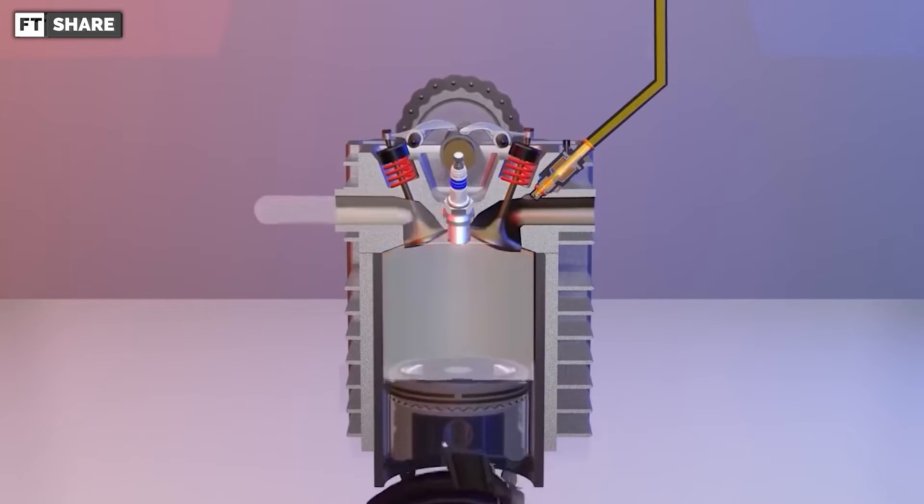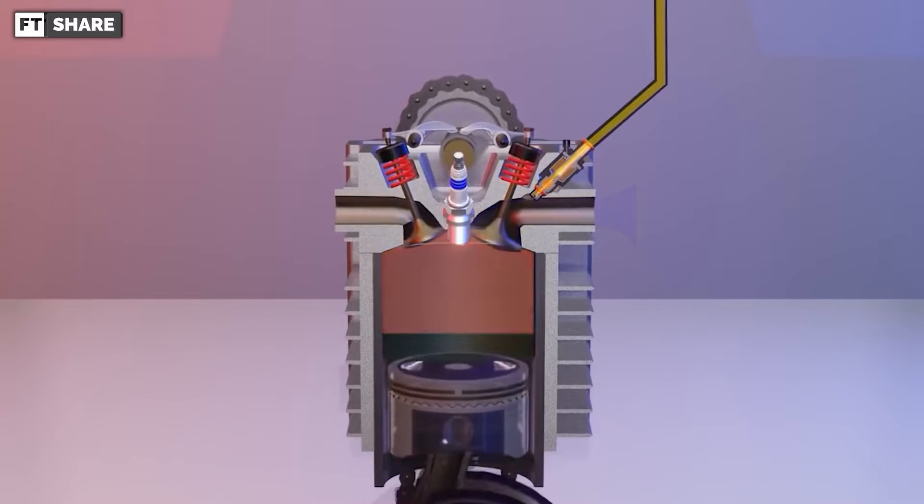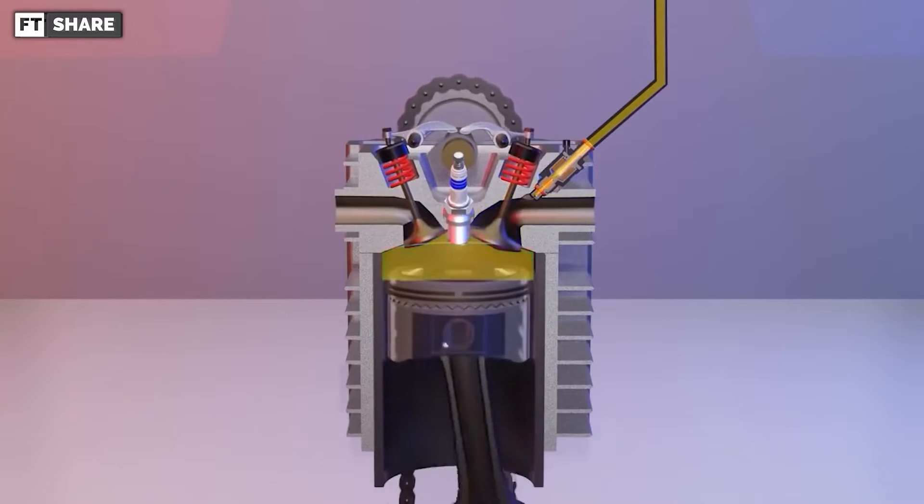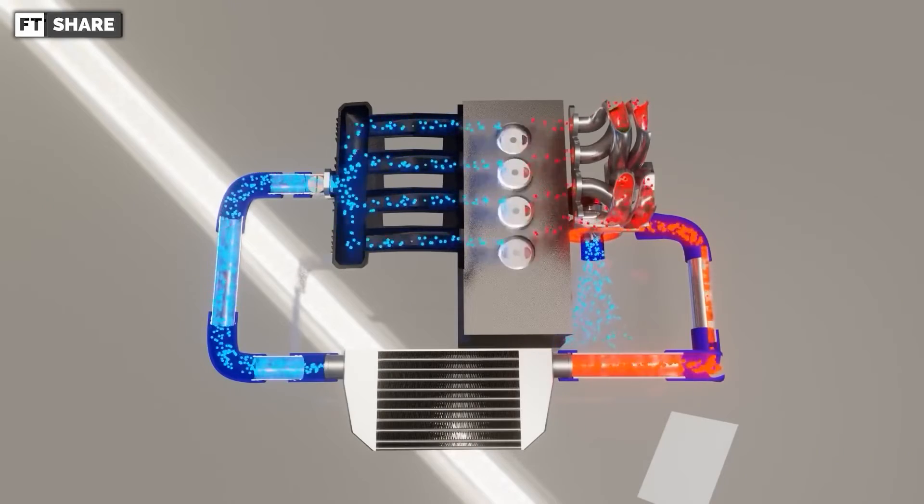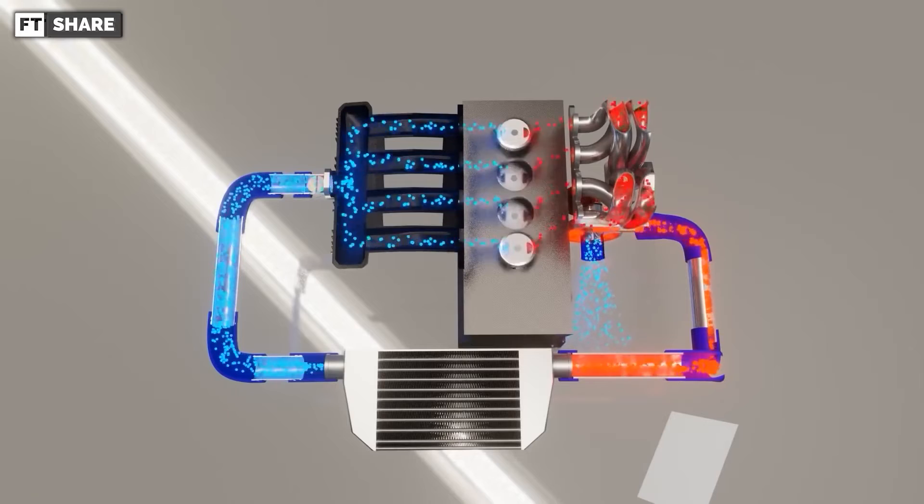This is important because the turbo compensates for the decreased compression ratio, aiming to increase pressure back to around 1 to 10. Typically, compression ratios are increased beyond 1 to 10 according to the octane rating of the fuel.